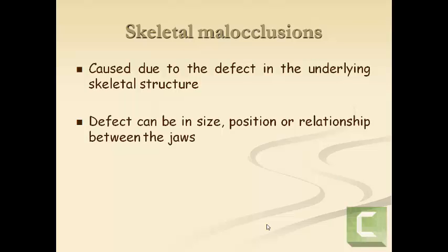This covers Angle's classification of malocclusion. Angle basically classified malocclusion according to dental problems, but there is also something called skeletal malocclusion, which can occur alongside dental problems. For example, you can have a class 2 skeletal malocclusion with a class 1 dental problem, or a class 2 dental malocclusion with a class 1 skeletal malocclusion, or a class 2 dental with a class 2 skeletal. The treatment plan will differ depending on the presence of a skeletal malocclusion.